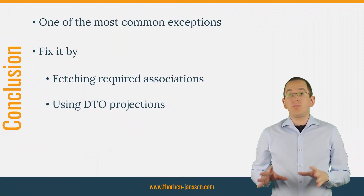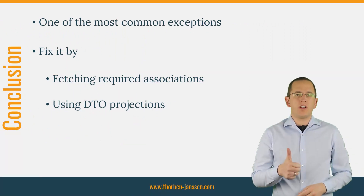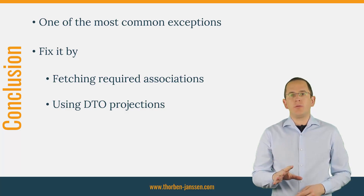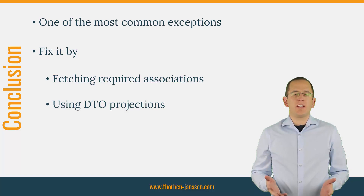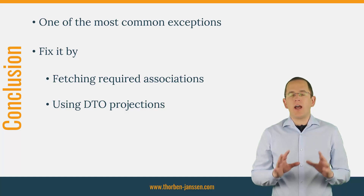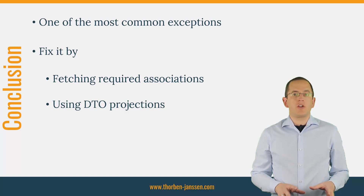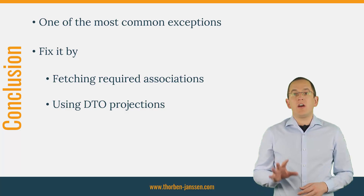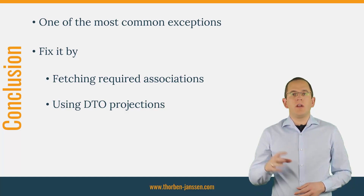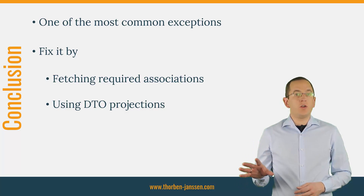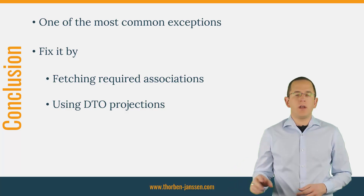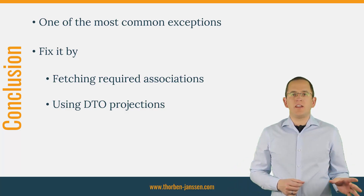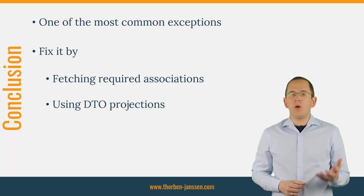If you have used Hibernate for a while, you probably had to fix at least one lazy initialization exception — it's one of the most common ones when working with Hibernate. As I explained in this video, you can find lots of advice online on how to fix this exception, but a lot of these suggestions only replace the exception with problems that will show up in production. There are only two good solutions: initialize all required associations when you load the entity using a left join fetch clause, a named entity graph, or the EntityGraph API — or use a DTO projection instead of entities. DTOs don't support lazy loading and you need to fetch all required information within your service layer.